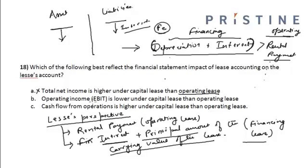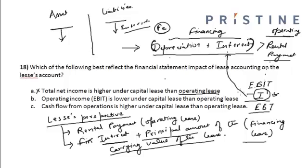The second option states that operating income EBIT is lower under capital lease than operating lease. This is also incorrect. EBIT is earnings before interest and taxes. Under financing lease, interest is a major chunk of the expense reported on the carrying value of the lease, whereas under operating lease no lease interest is recorded. Hence EBIT is actually higher under capital lease than operating lease.